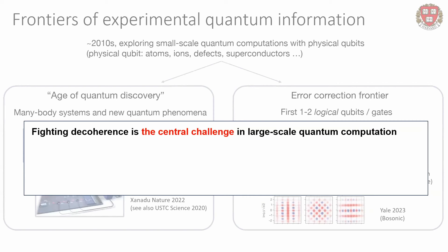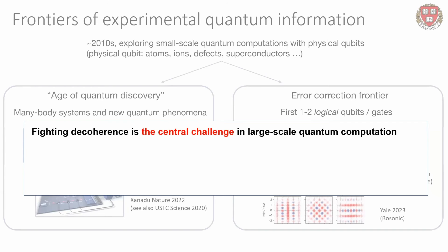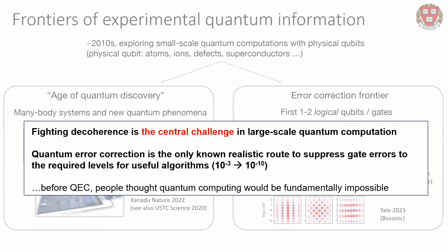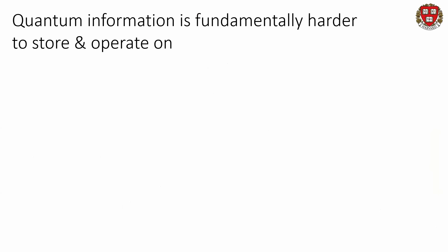Broadly, we would like to use quantum mechanics for computation and for simulating quantum systems. The central challenge we have to face is that of decoherence. Quantum error correction is the only known realistic route to suppress operation errors from what our physical qubits have — on the scale of 10^-3 — to what we need for interesting quantum algorithms — requiring operation errors at the scale of 10^-10. Before quantum error correction was invented, people thought quantum computing would be fundamentally impossible, and there are many good reasons to believe that, because quantum information is fundamentally very different than classical information.